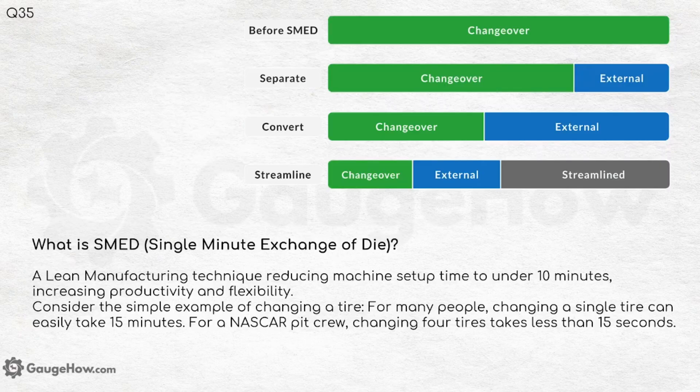What is SMED — Single Minute Exchange of Die? It is a lean manufacturing technique reducing machine setup time to under 10 minutes, increasing productivity and flexibility. For example, while an average person may take 15 minutes to change a single tire, a NASCAR pit crew changes 4 tires in under 15 seconds — that is the ideation behind SMED.